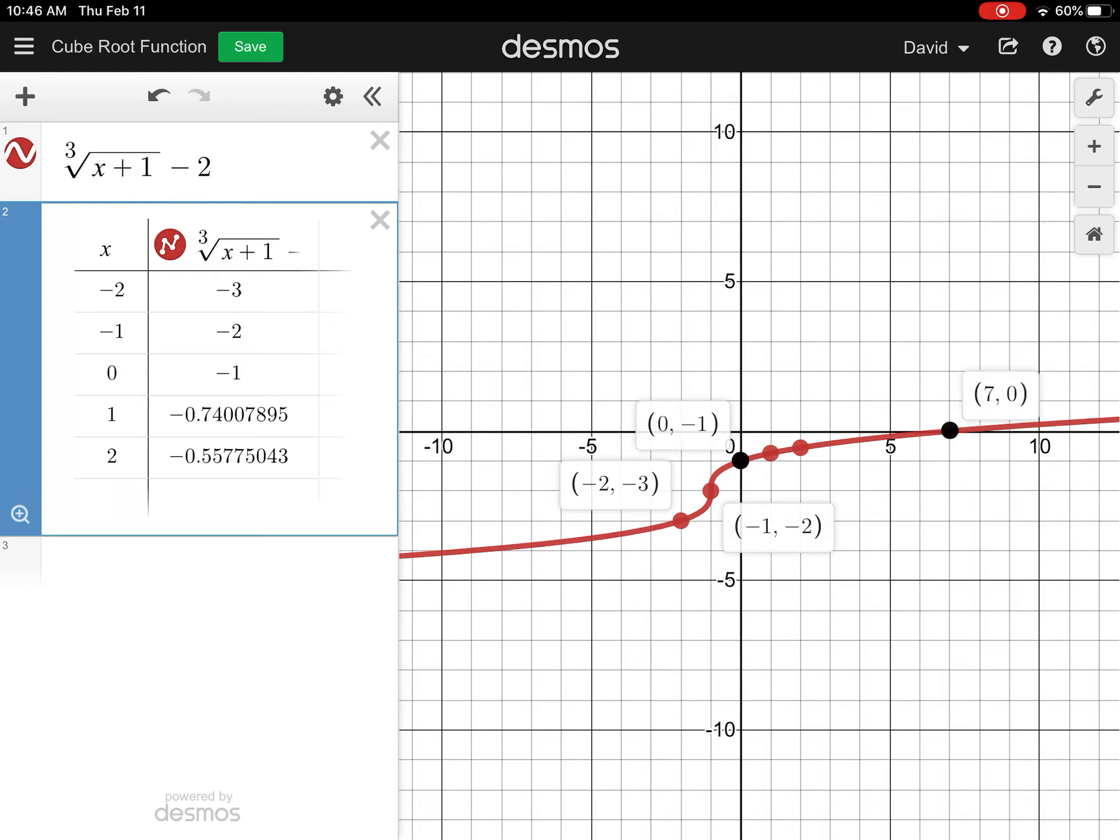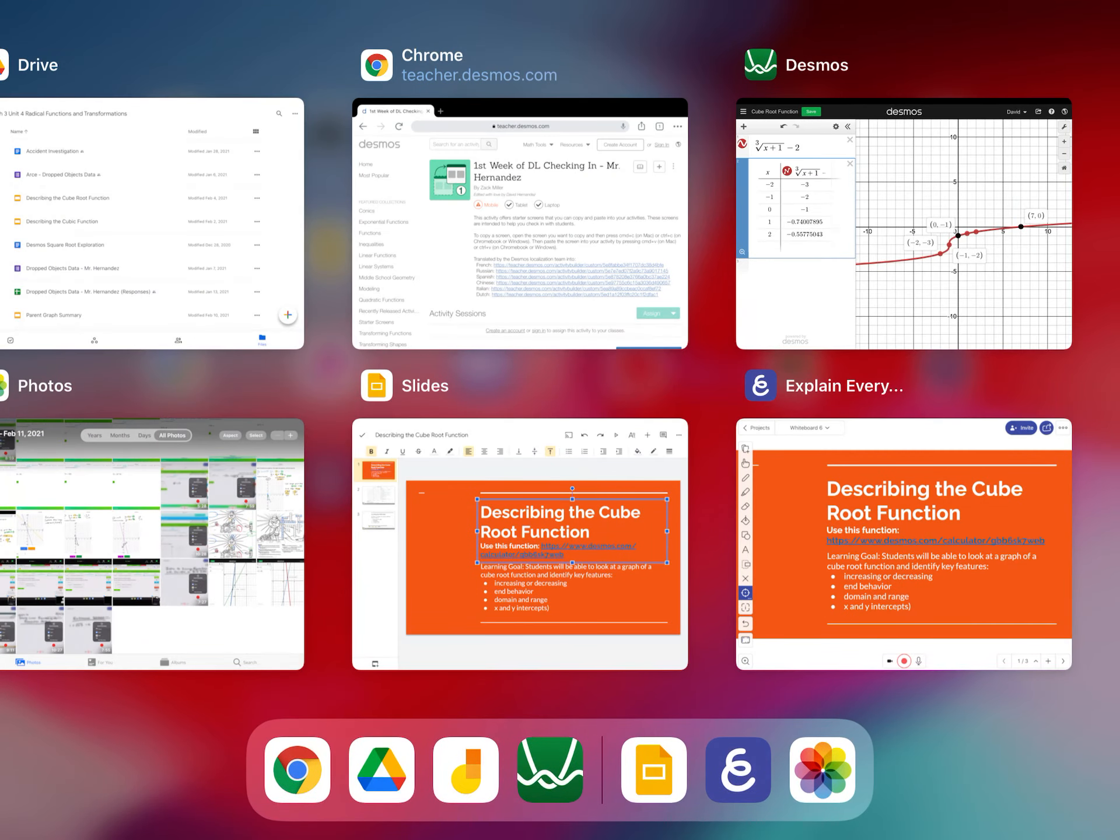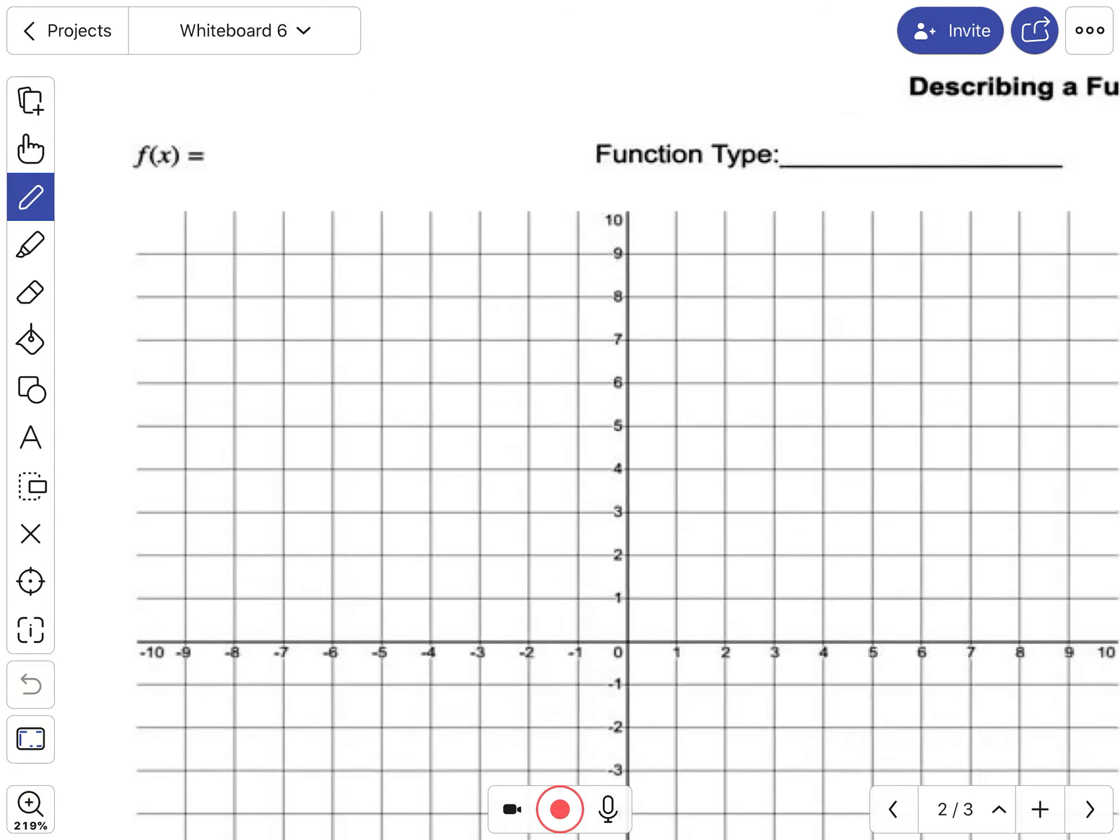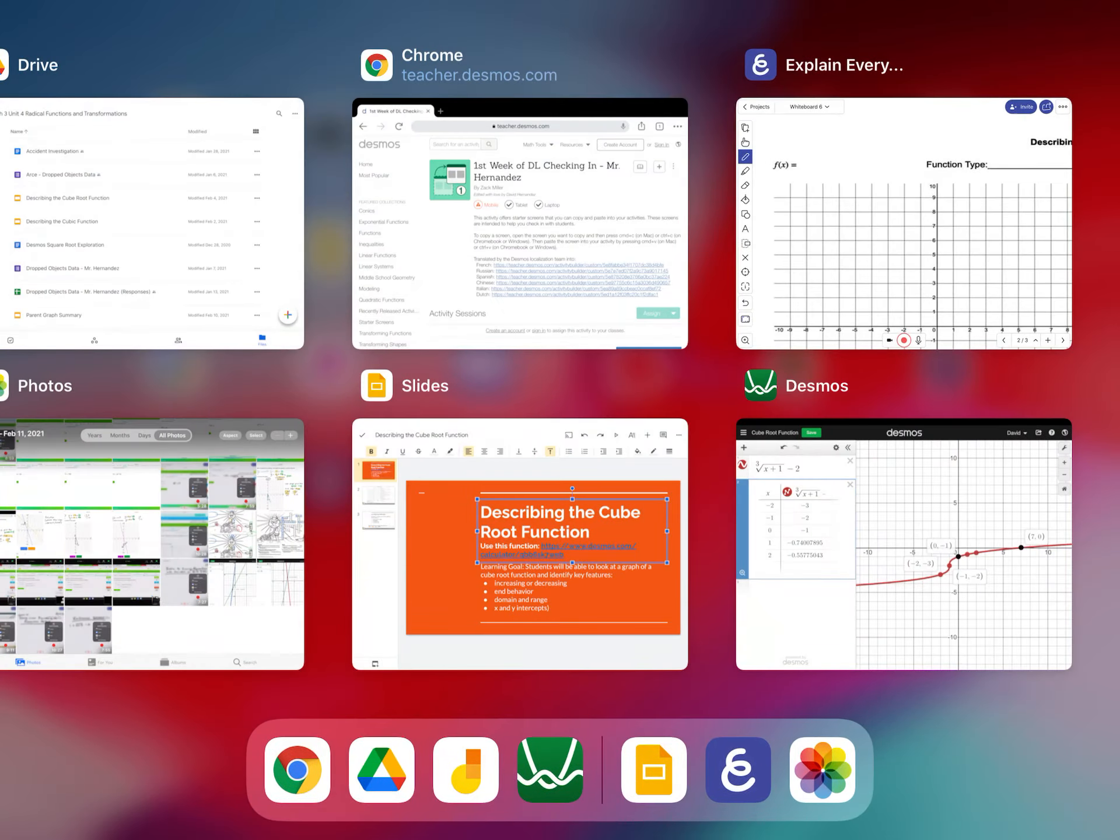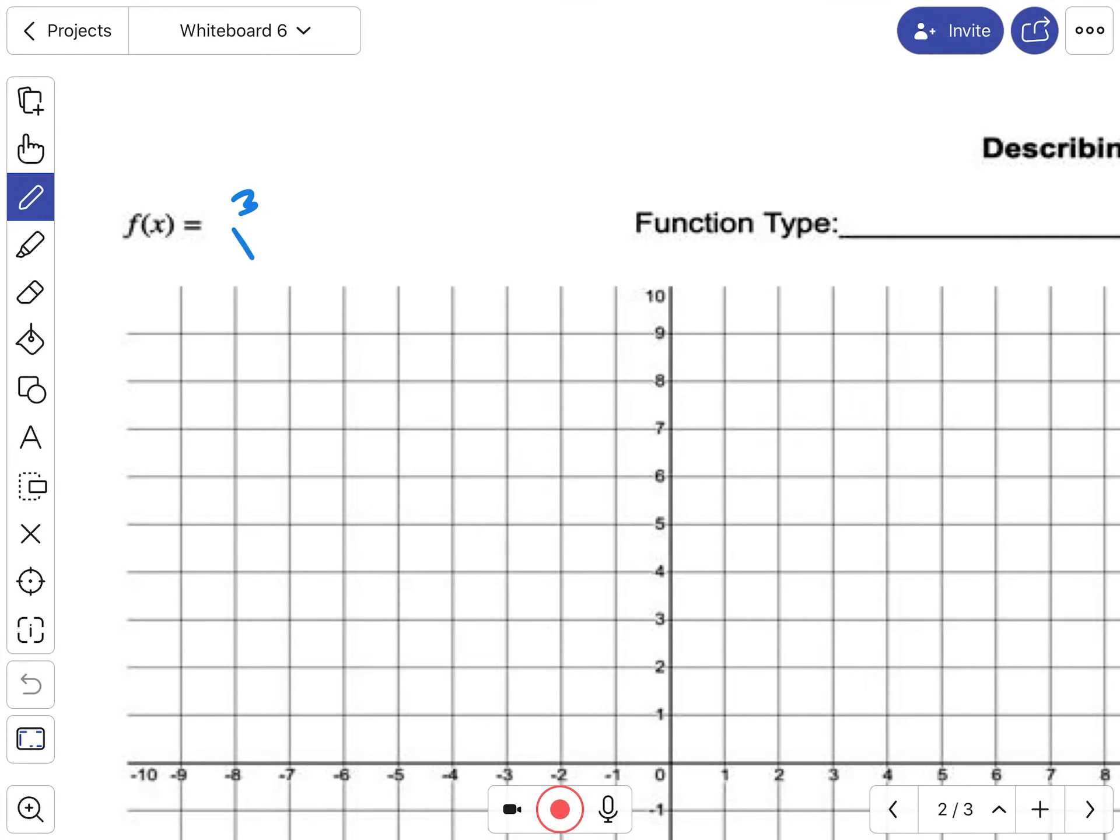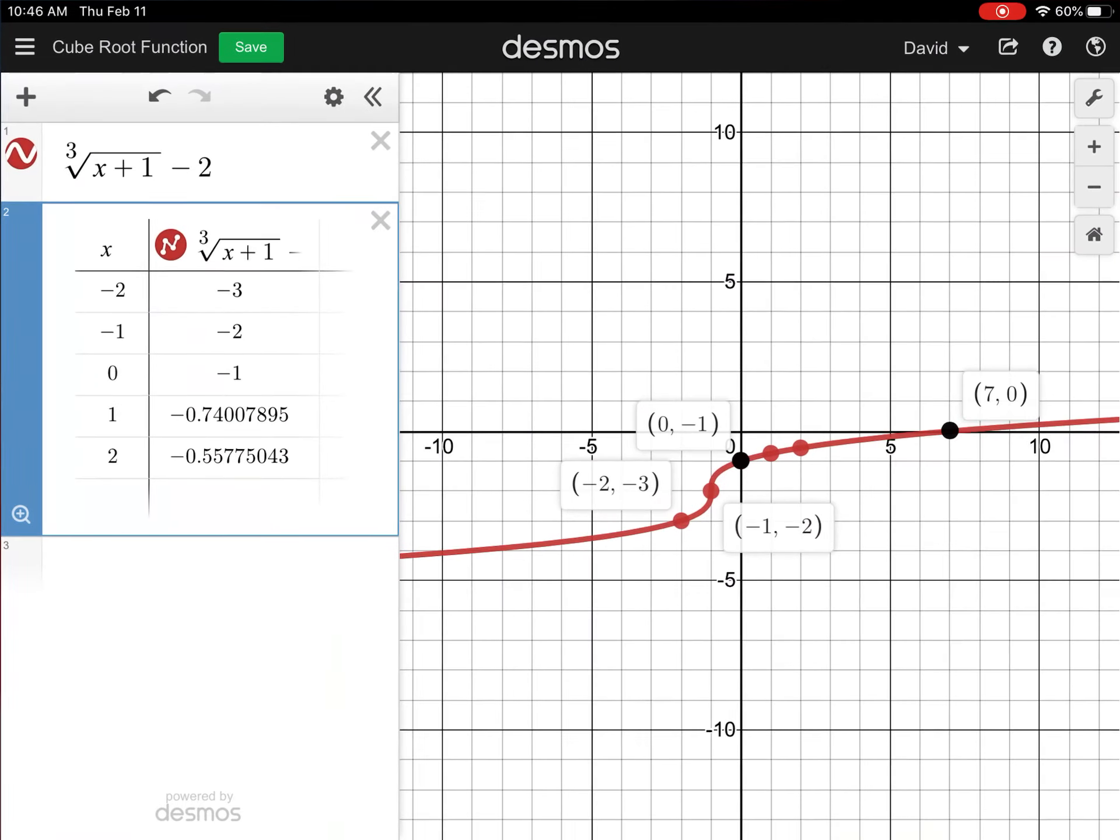You also have that x-intercept, so I'm going to use those points to graph. The first thing we're going to do is copy down the actual equation, so it's the cube root of x plus 1, and then you got the minus 2.